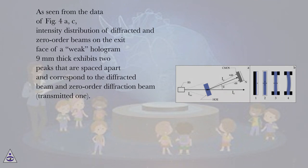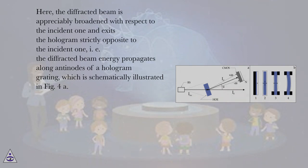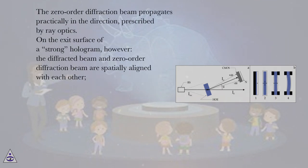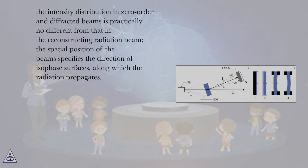As seen from figure 4a, the intensity distribution of diffracted and zero-order beams on the exit face of a weak hologram 9 mm thick exhibits two peaks that are spaced apart, corresponding to the diffracted beam and the zero-order diffraction transmitted beam. The diffracted beam is appreciably broadened with respect to the incident beam and exits the hologram strictly opposite to the incident one, i.e., the diffracted beam energy propagates along antinodes of the hologram grating, as schematically illustrated in figure 4a. The zero-order diffraction beam propagates practically in the direction prescribed by ray optics. On the exit surface of a strong hologram, however, the diffracted beam and zero-order diffraction beam are spatially aligned with each other, and the intensity distribution in both beams is practically no different from that in the reconstructing radiation beam. The spatial position of the beam specifies the direction of isophase surfaces along which the radiation propagates.